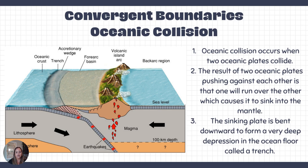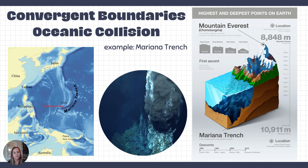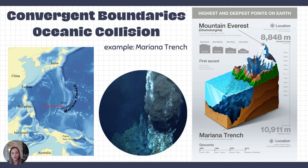One area where we see oceanic-oceanic collision is the Mariana Trench, just south of Japan and north of Australia. The Mariana Trench is the deepest trench on Earth. The deepest point along it is the Challenger Deep — the deepest point on Earth in our oceans as far as we know today.